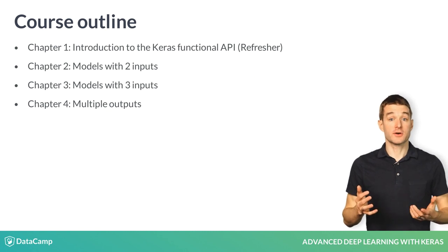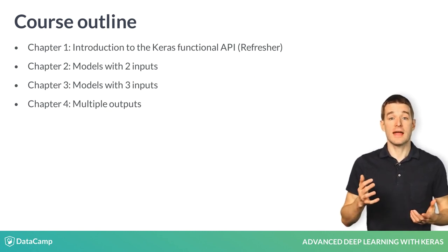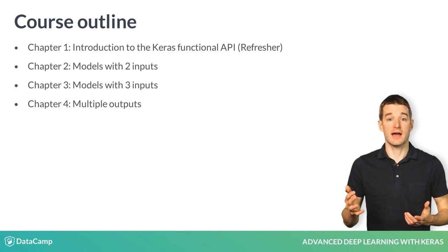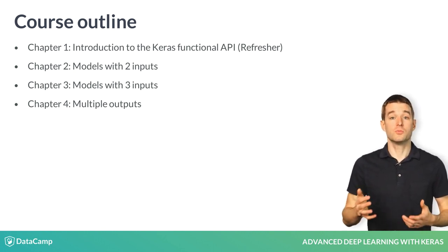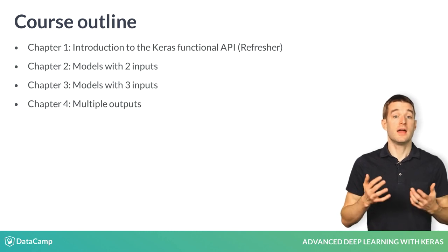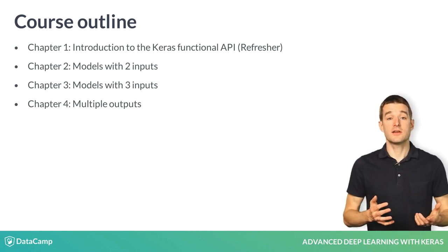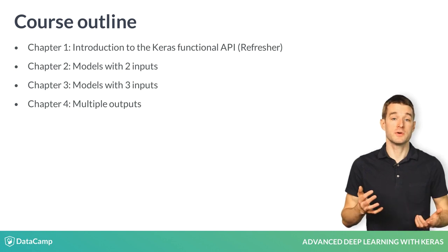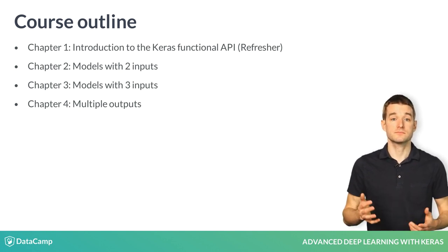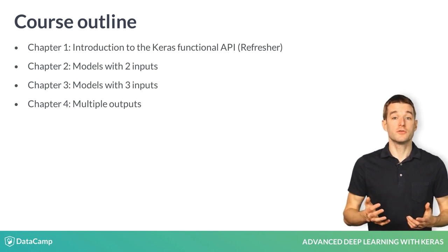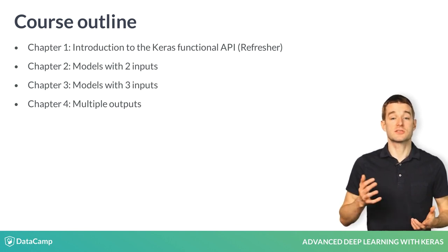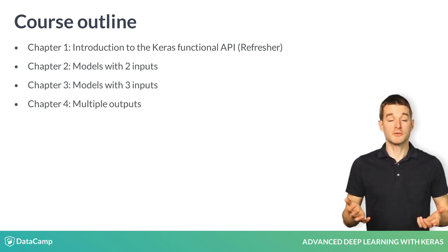Chapter one is a refresher on building simple models where you will learn how to use the Keras Functional API. In chapter two, you will build a Keras model with two inputs. In chapter three, you will learn how to generalize your two-input model to three or more inputs. And finally, in chapter four, you will build models with multiple outputs that can solve multiple problems.